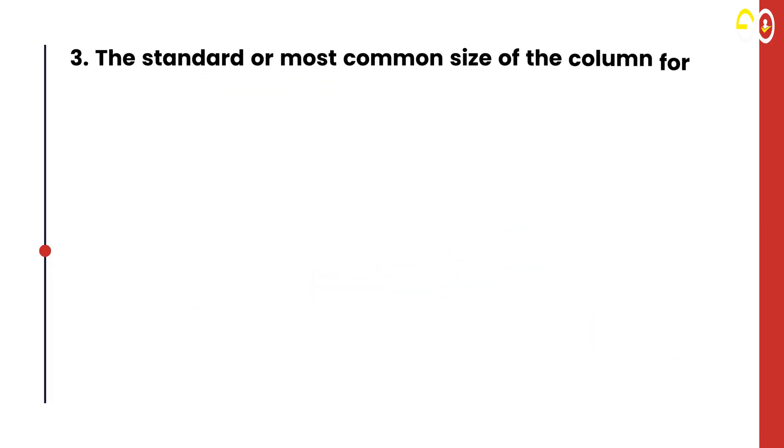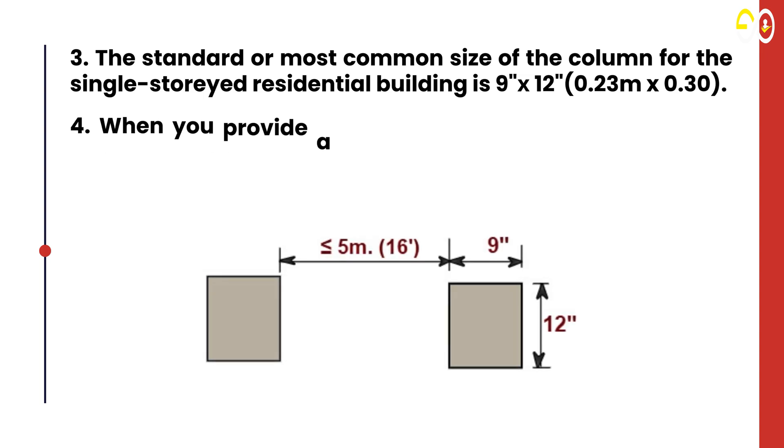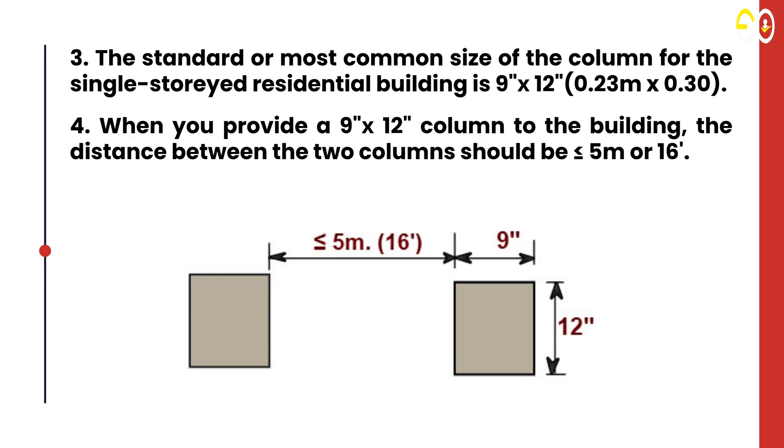3. The standard or most common size of the column for single-story residential buildings is 9" x 12" (0.23m x 0.30m). 4. When you provide a 9" x 12" column to the building, the distance between two columns should be ≤ 5m (16').